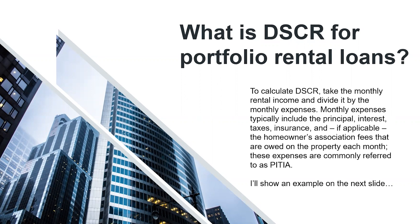We look for a 1.2 ratio or better. We do have programs that allow for 0.80, so there are options out there. Typically you want a property that essentially covers the debt and the payments. Sometimes people are purchasing properties for short-term rentals, and if we're not using a projection-based loan, the market rent or long-term rent can suffice — that's why we're sometimes able to go under the 1.2. So there are multiple options to fund these types of loans.